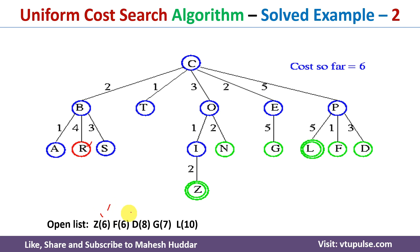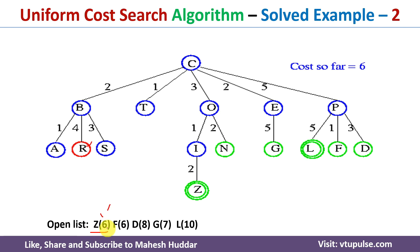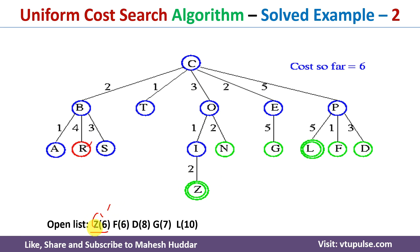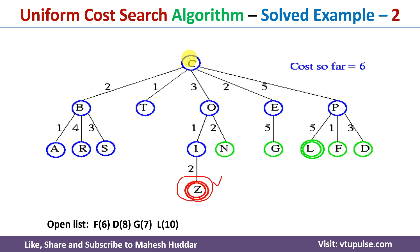Next is Z6. Once I select Z, it is removed from the open list, and Z is the goal node — meaning we have reached the goal. The total cost is 6, since Z6 means the cost to reach Z is 6. The optimal path is C → O → I → Z with a cost of 3 plus 1 plus 2, which equals 6. This is how we apply the uniform cost search algorithm to find the optimal cost from root to goal. If you like the video, please like, share, subscribe, and press the bell icon for regular updates. Thank you for watching.